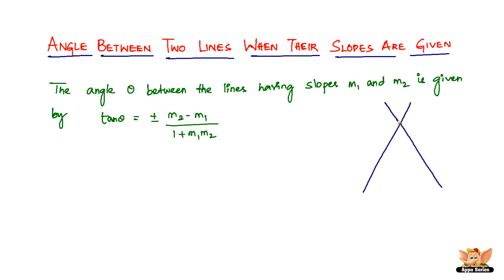Say for example you have two lines intersecting — let this be L1 and let this be L2. Let the slope of L1 be m1 and the slope of L2 be m2. To find the angle between these two lines, substitute the values of the slopes into the formula: tan theta equals plus or minus m2 minus m1 divided by 1 plus m1 times m2.